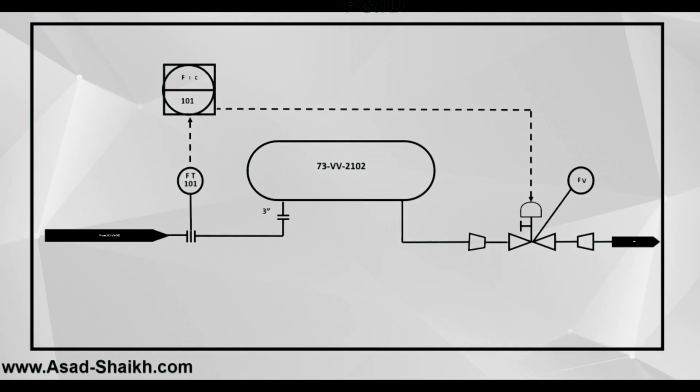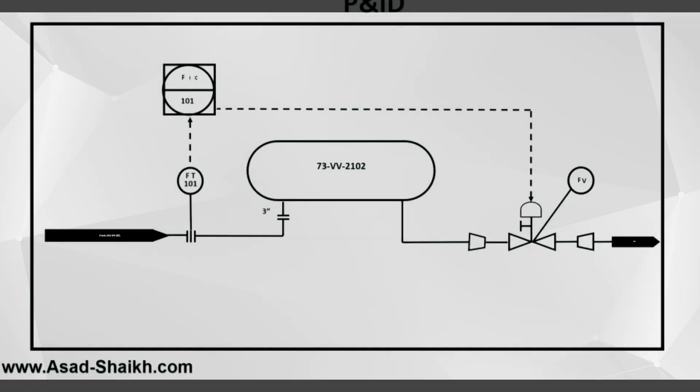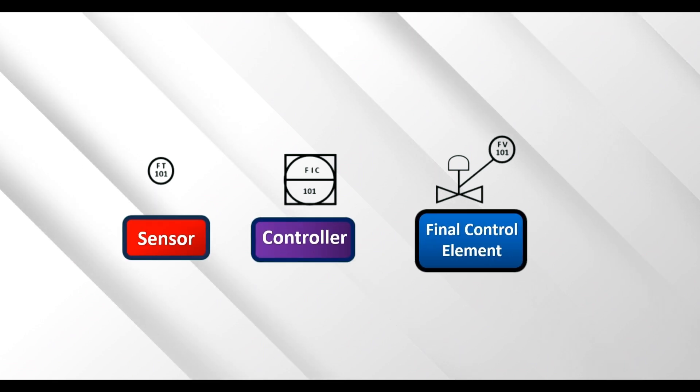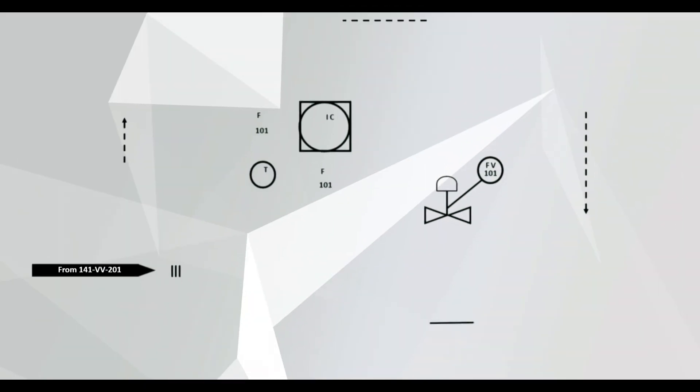So let's start with understanding how an instrumentation index is made. Three important parameters are required in any instrumentation control loop: sensor, the controller and the final control element. So let's put them together of how these would look in any typical PNID.